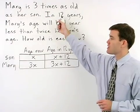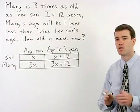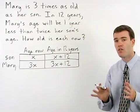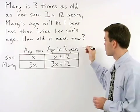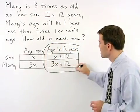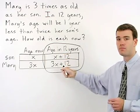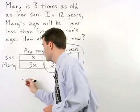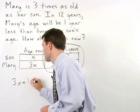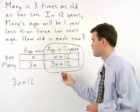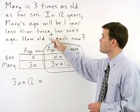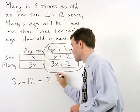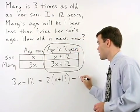Reading through the second sentence, we start with: in twelve years. That tells us that all the information in our equation is going to come from the age in twelve years column. So in twelve years, Mary's age — that's 3x plus twelve — will be equal to one year less than twice her son's age. That's two times x plus twelve, minus one.